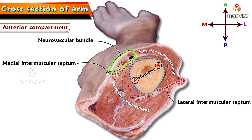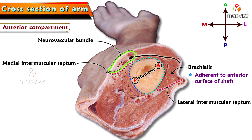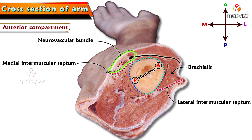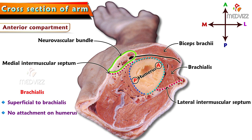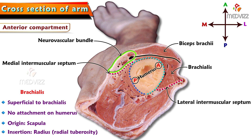The muscle adherent to the anterior surface is brachialis. Brachialis gets its origin from the lower part of the anterior surface of the shaft of humerus. The muscle superficial to brachialis is biceps brachii. Biceps brachii has no attachment on the humerus — it gets its origin from the scapula and inserts into the radial tuberosity of radius. So biceps brachii is superficial to brachialis with no attachment with the humerus.